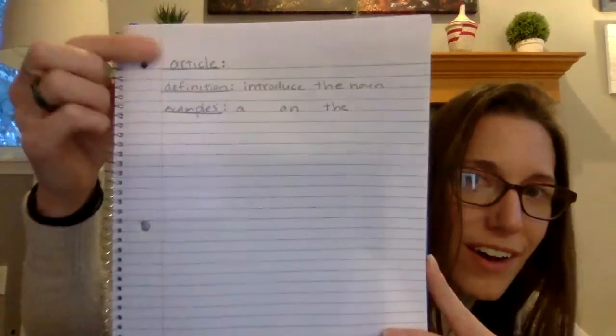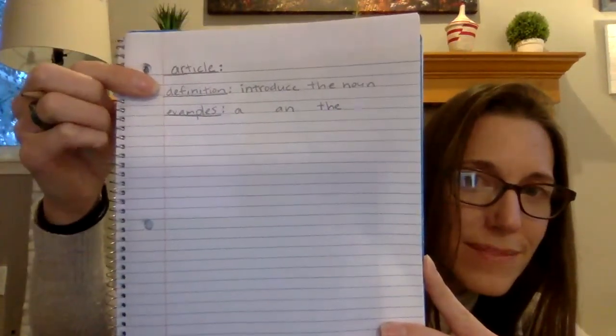So in our notebook let's record that. Articles are symbolized by the little light blue triangle. We talked about nouns in a different video — nouns are symbolized by the large black triangle. In our journals, in our notebooks, let's write down the part of speech: it's 'article.' We're going to define it as: its job is to introduce the noun. And there are three small examples: a, an, and the.